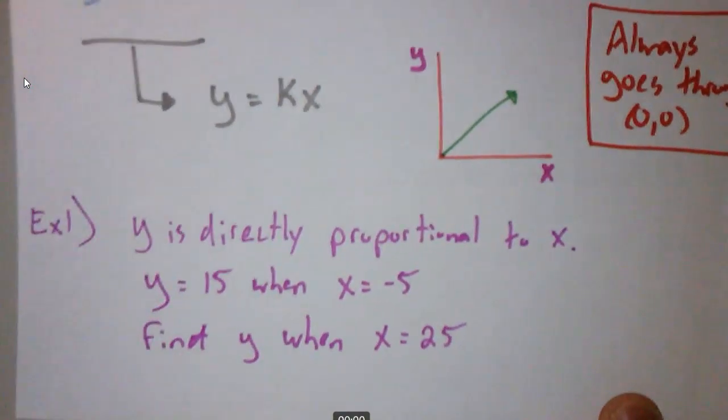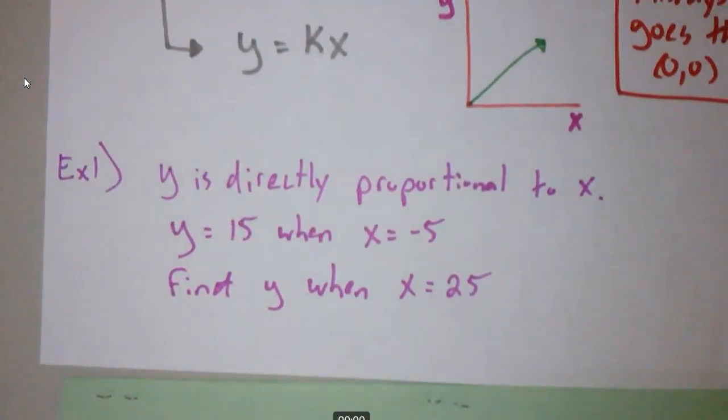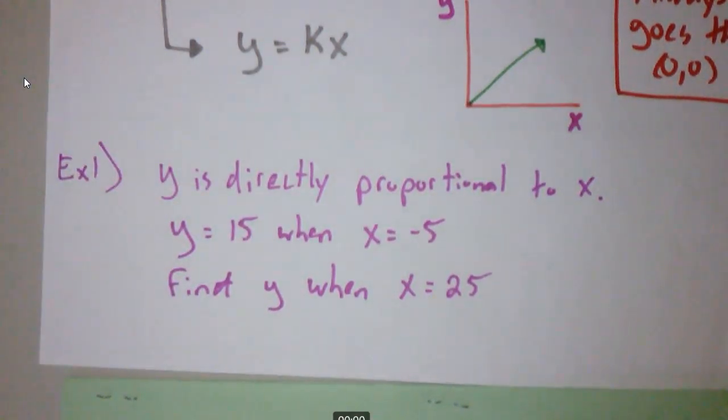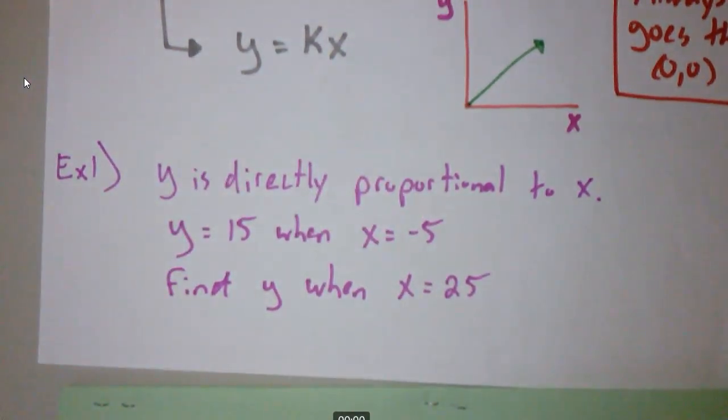Let's do an example and see if we can knock this stuff out. So no bells and whistles. No context here. Just straight up, Y is directly proportional X. I am telling you Y and X are directly proportional. Y will be 15 when X is negative 5. Figure out what Y is when X is 25. You can hit pause for a second. Try this problem out. We're going to use the formula right above in gray. If I know what Y is and I know what X is, the only thing I don't know is K. And I can find that constant of proportionality. And then once I have the constant of proportionality, I have this formula that will help me solve any of these problems.